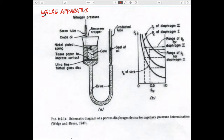It's worth noting that nothing we've done addresses how quickly these fluids move — only the equilibrium situation. In the Welge apparatus, you take a core sample and place it on a frit that doesn't allow oil to pass. The core is filled with water — the wetting fluid — and surrounded by oil — the non-wetting fluid — in a container. A rubber bung above allows the system to be completely filled with oil.